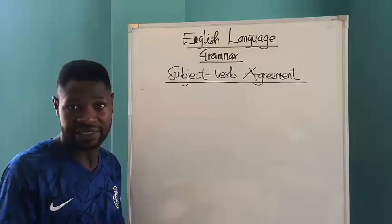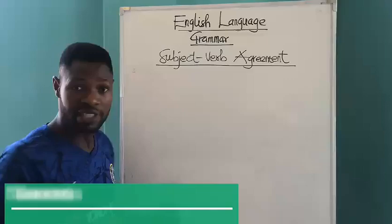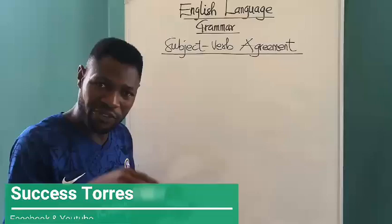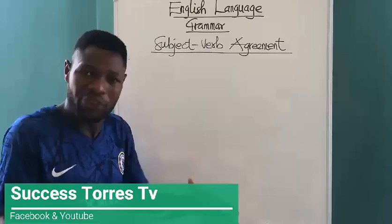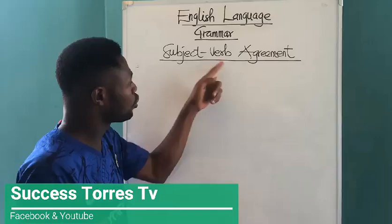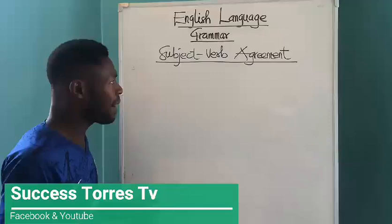When we talk about subject, we are talking about the noun or pronoun in the sentence. When we talk about verb, we know it is the action word. The point is that, with respect to subject-verb agreement, it is majorly important that we know there is this relationship — this agreement between the subject and the verb in the sentence.